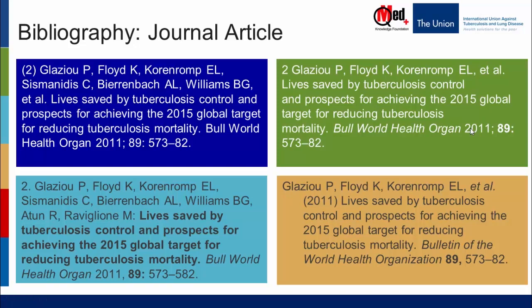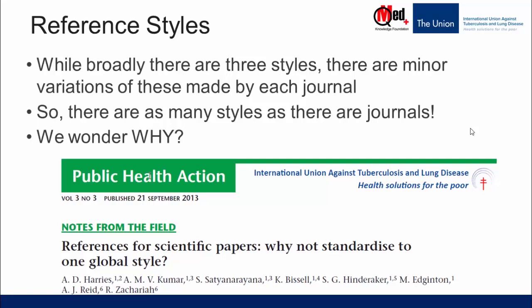These kinds of variations can give rise to thousands and thousands of styles. While broadly there are only three styles as discussed in the previous video, there are minor variations made by each journal. So it's not an exaggeration to say that there are as many styles as there are journals. The question is: why do we need so many styles? As researchers, should we be focusing on the science or on bold fonts, italics, and punctuations?